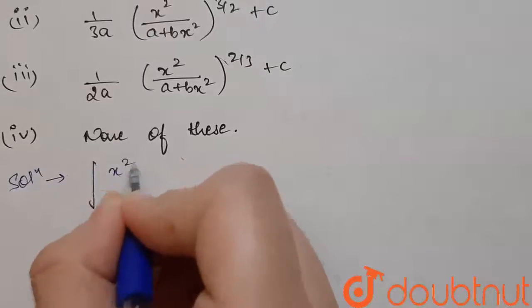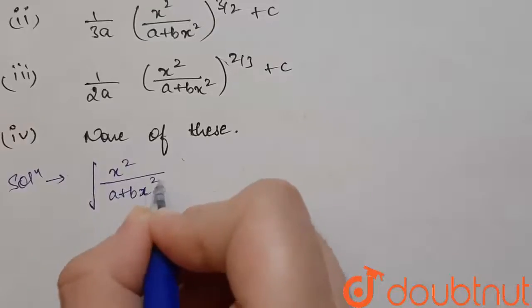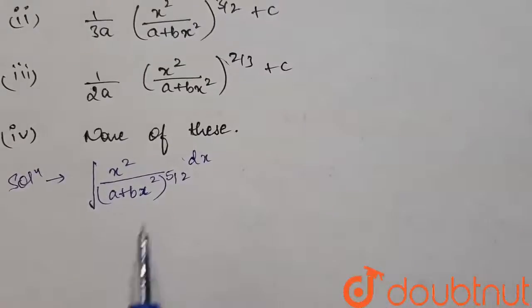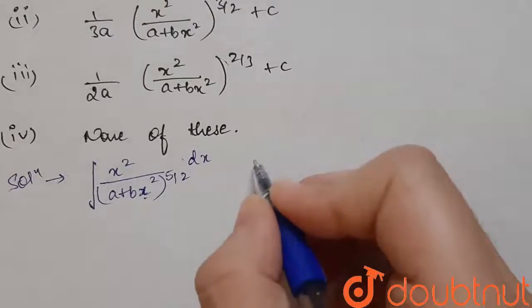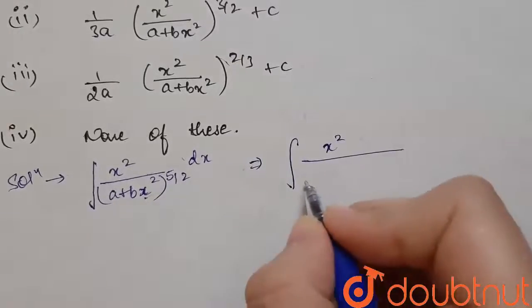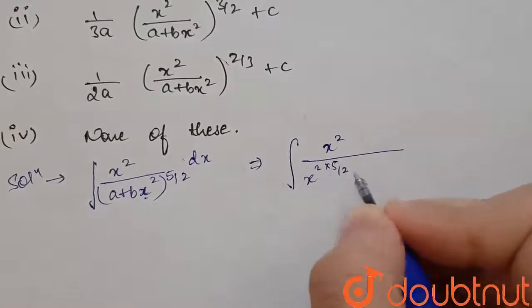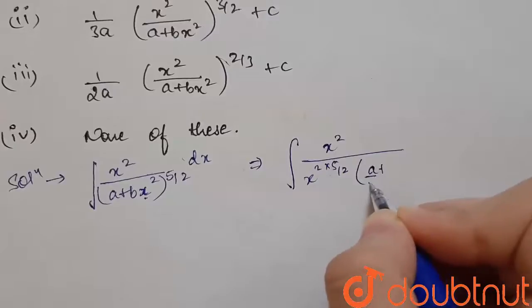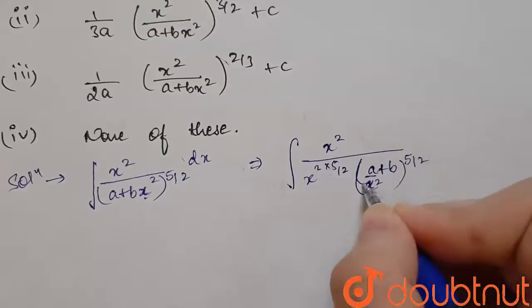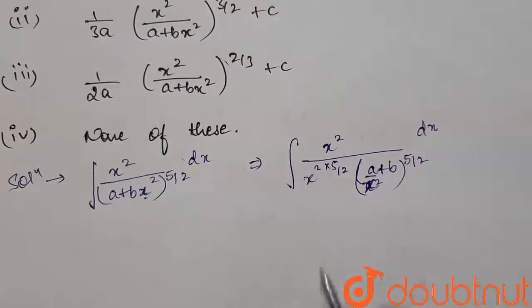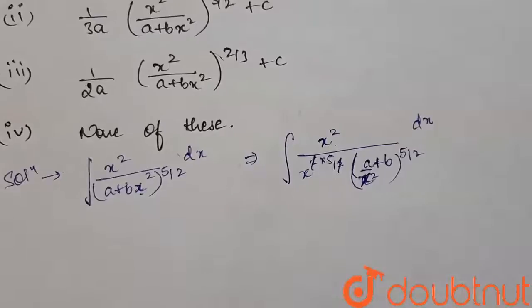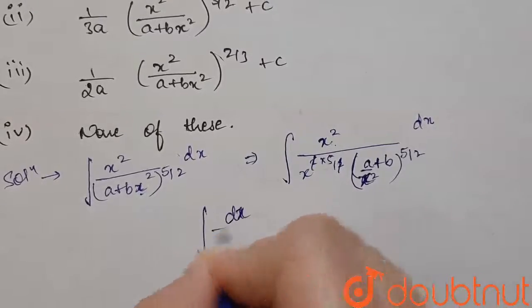The question is: integration of x²/(a + bx²)^(5/2) dx. We will take x² common from the denominator, so the expression becomes x² divided by x^(2 × 5/2) times (a/x² + b)^(5/2). After cancelling the powers, we have integration of dx by x³ into (a/x² + b)^(5/2).